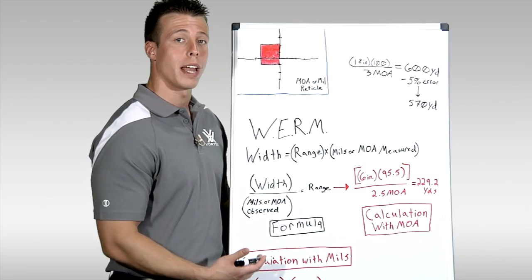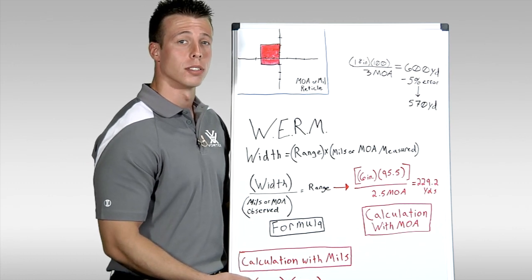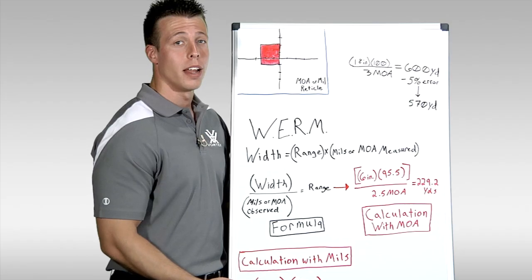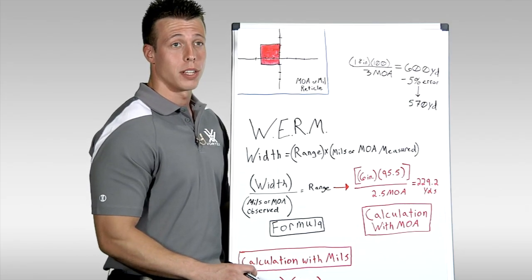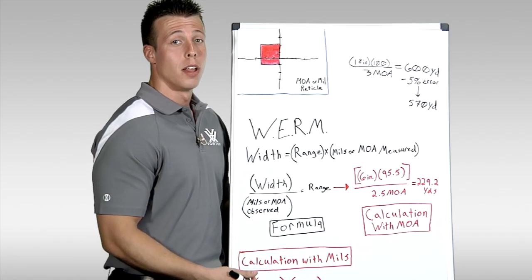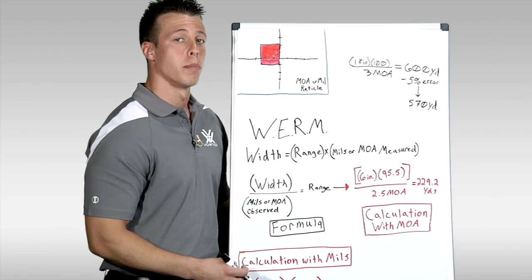At Vortex Optics, we produce and promote rifle scopes that have both minute of angle and milleradian reticles for estimating distance of the target. However, we don't promote any one over the other one. There is no such thing as better or worse than the other. We encourage you to find out for yourself which one will work best for you and your intended purposes.